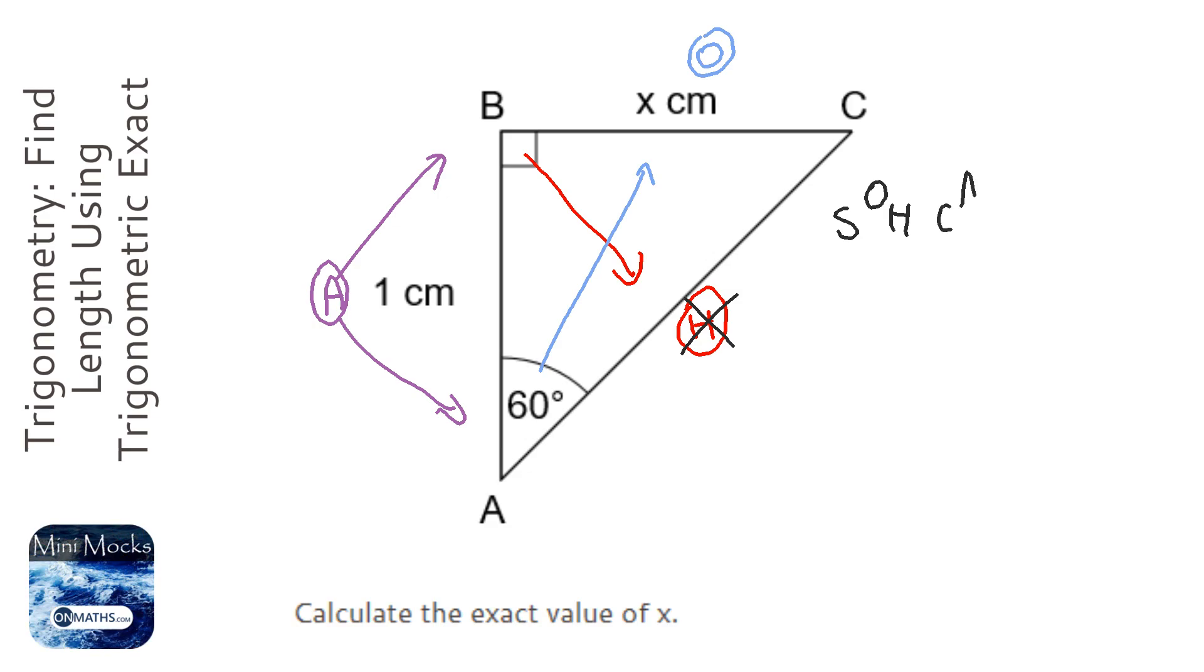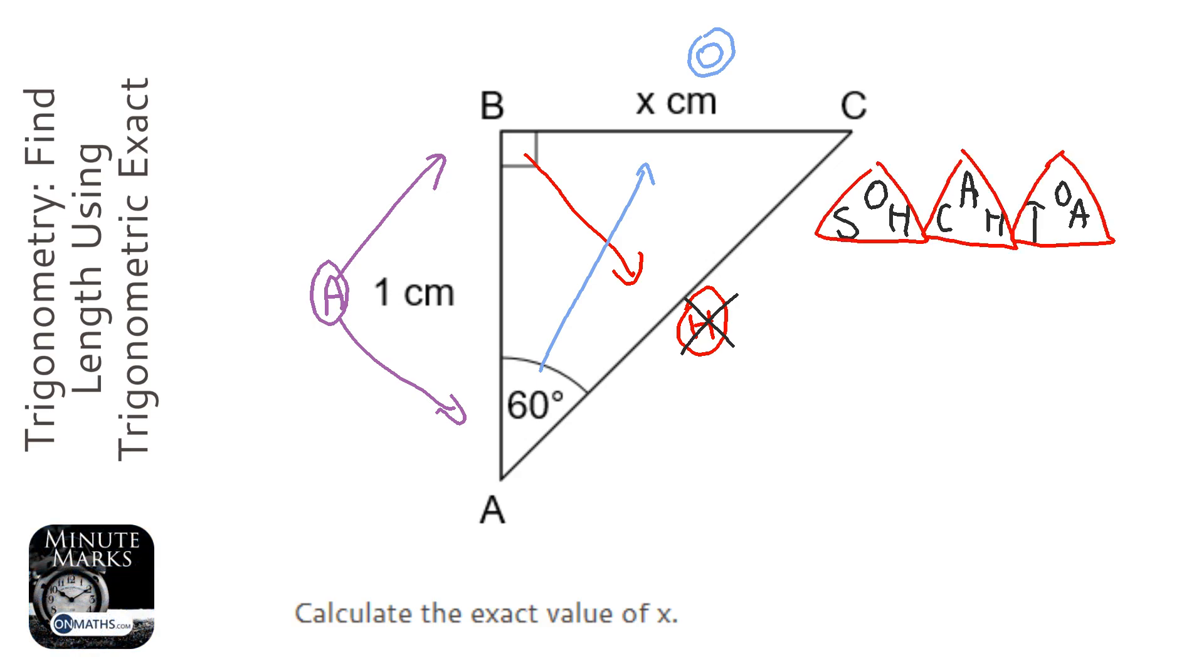I'm going to write out SOHCAHTOA, which obviously you need to know off by heart, which are the three trigonometric ratios. Now, we're going to cross out the ones with H in, because we're not using H, so we're left with TOA.